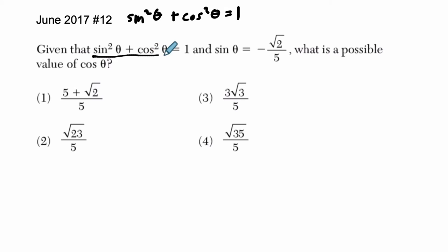And this amazing identity helps us use an algebraic approach to solve this problem. They're telling us the sine of theta is negative radical 2 over 5. So what are the possible values of the cosine of theta?